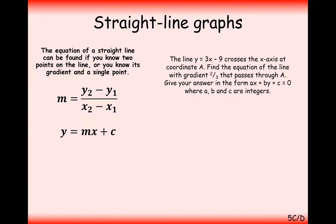The next question is a little more tricky with a lot more work, so let's take it carefully. The line y equals 3x minus 9 crosses the x-axis at coordinate A. We need to find the equation of the line with gradient 2/3 that also passes through A, and write the answer in the form ax plus by plus c equals 0. So first we need to find coordinate A — 2/3 is the gradient, but we don't yet know where it passes through.